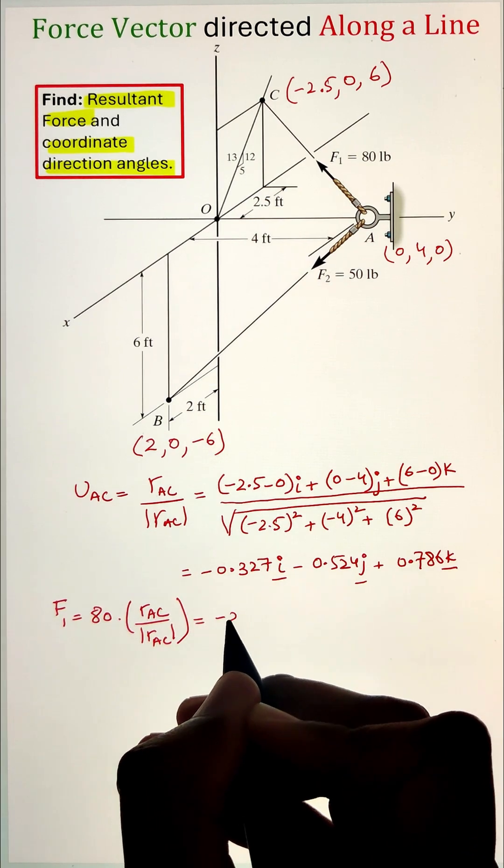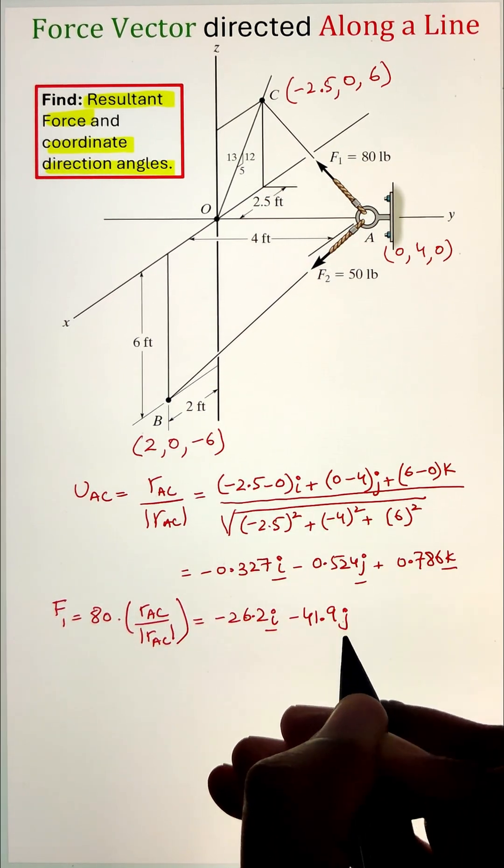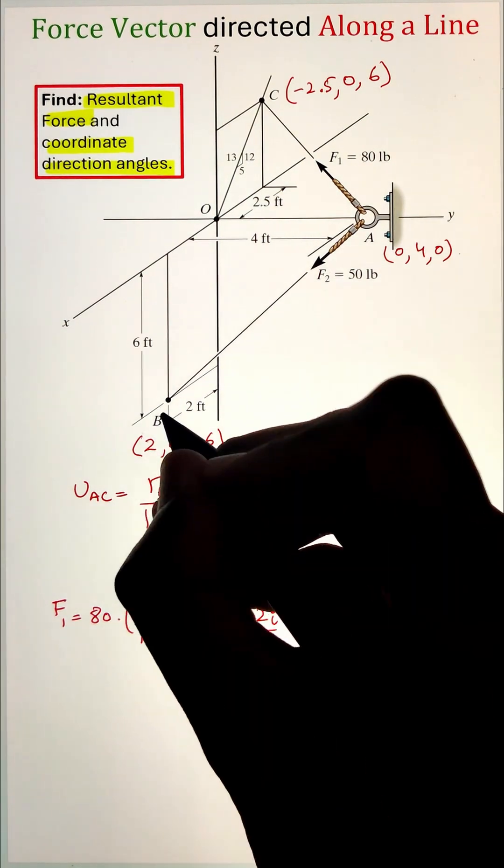Once we have the unit vector, multiplying it with the magnitude of the force, that is 80 pounds in this case, gives us the force F1 in the Cartesian vector form.